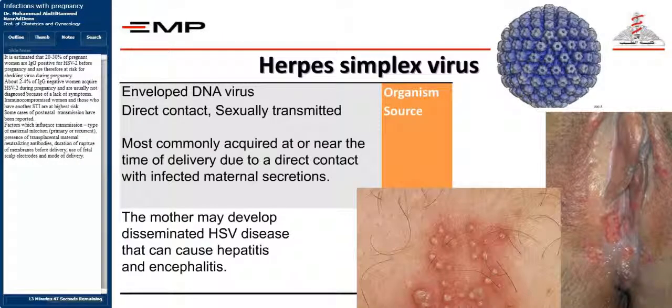Regarding Herpes Simplex Virus (HSV): it is estimated that 20–30% of pregnant women are IgG-positive for HSV-2 before pregnancy and are therefore at risk for shedding virus during pregnancy. About 2–4% of IgG-negative women acquire HSV-2 during pregnancy, usually undiagnosed due to lack of symptoms. Immunocompromised women and those with another STI are at highest risk. Factors influencing transmission include: type of maternal infection (primary or recurrent), presence of transplacental maternal neutralizing antibodies, duration of rupture of membranes before delivery, use of fetal scalp electrodes, and mode of delivery.